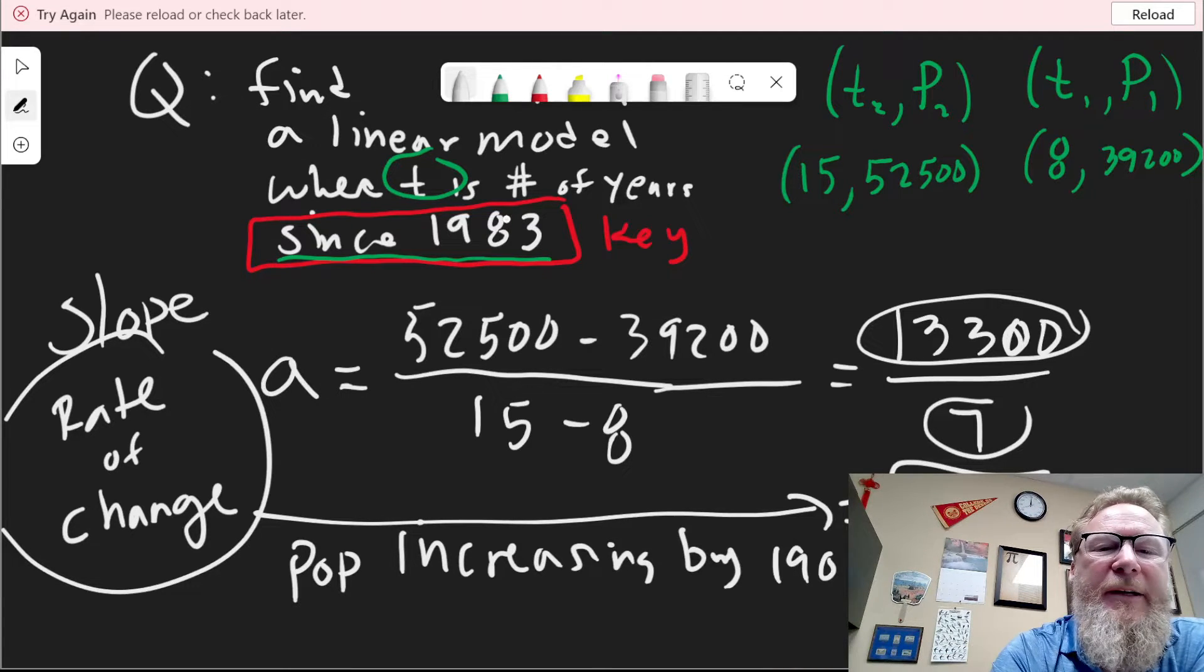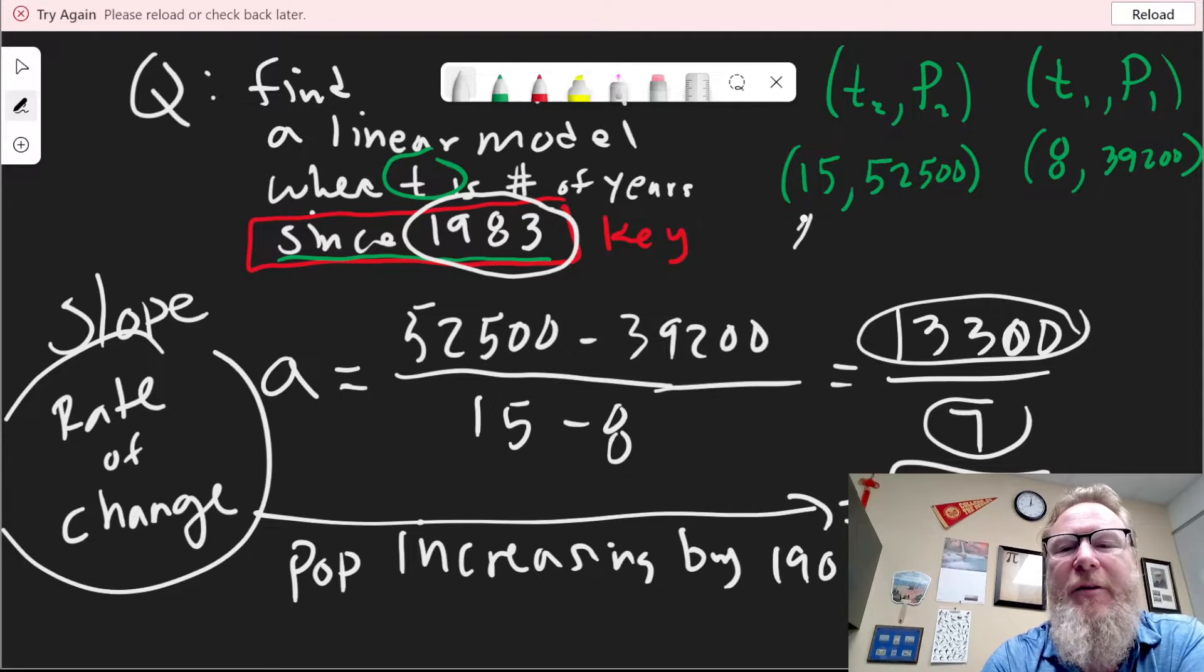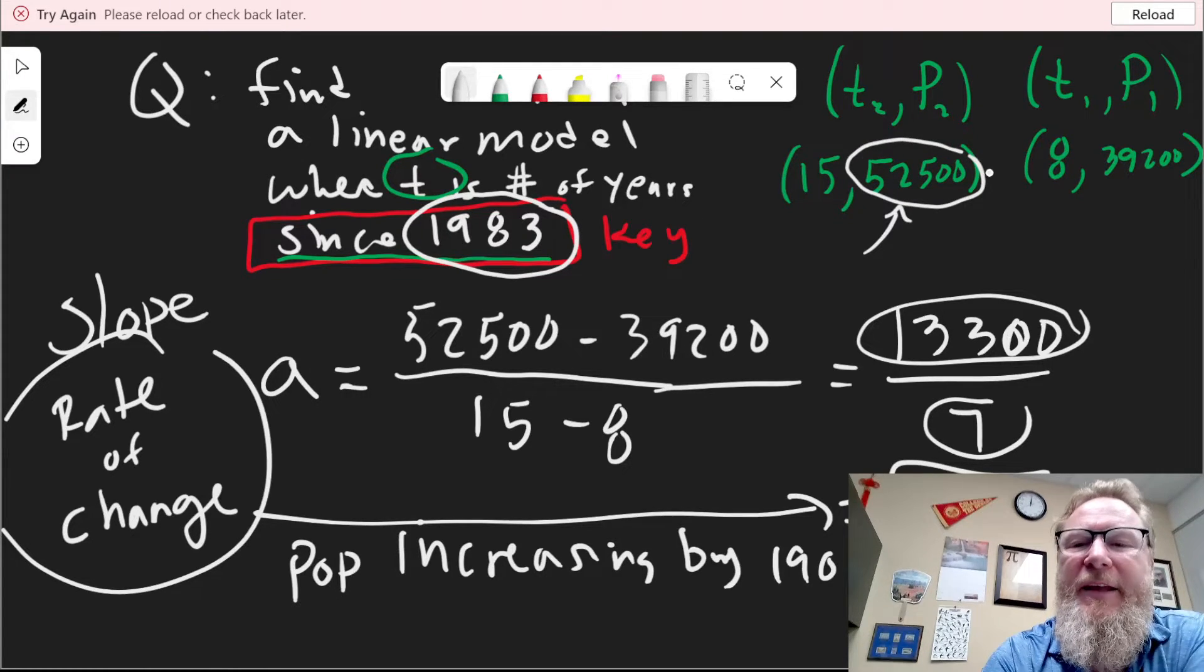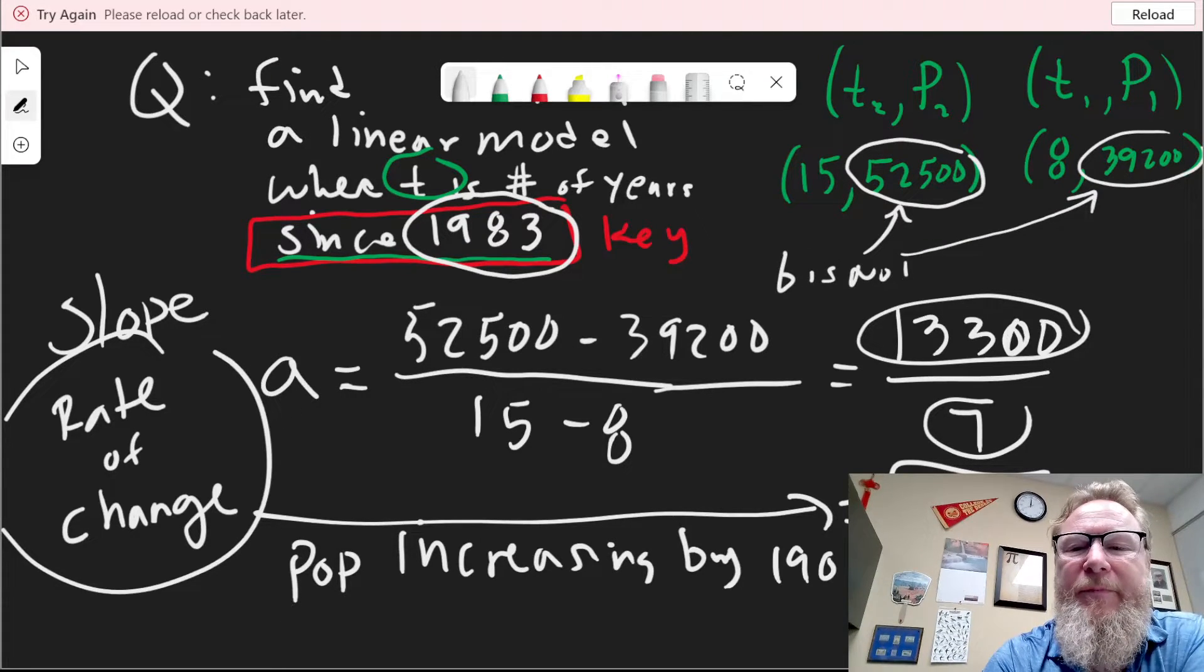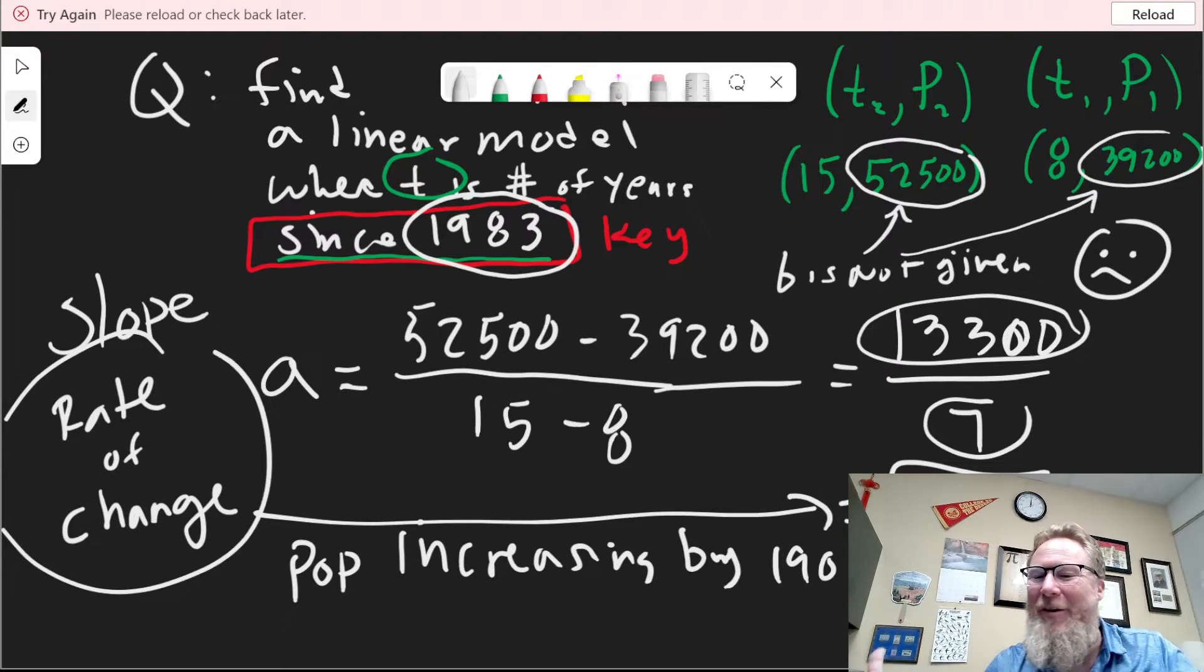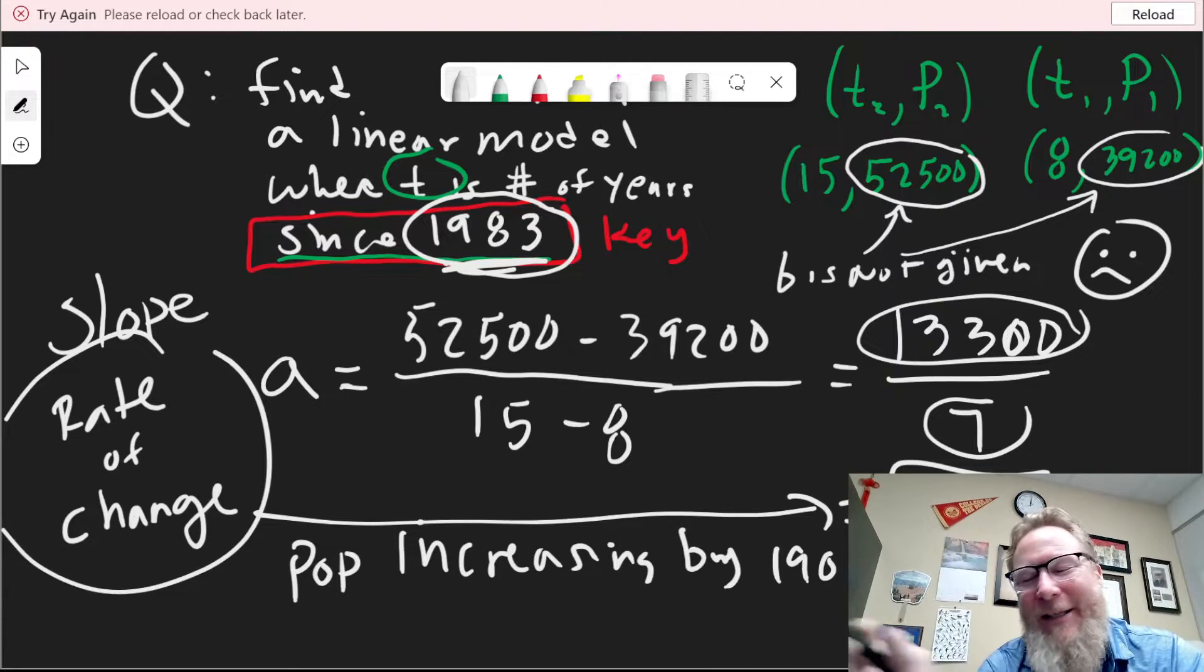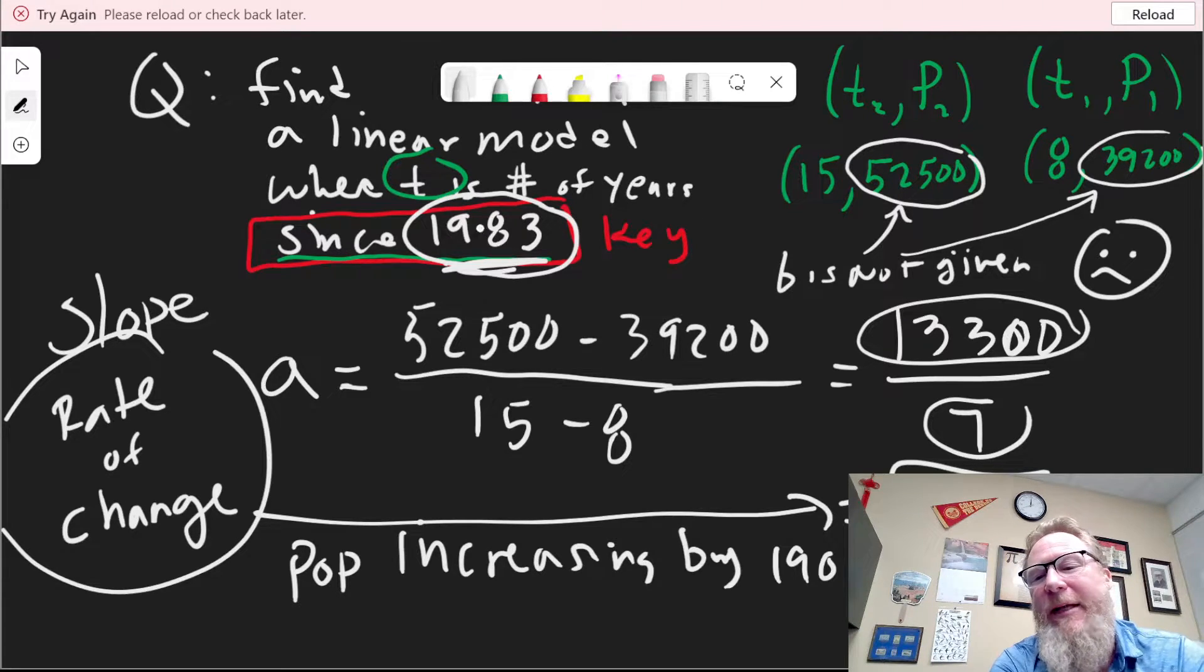This means the rate of change is increasing, because it's positive. The population is increasing by 1,900 people per year. So now the problem is we need B. B is not given. None of these are B.